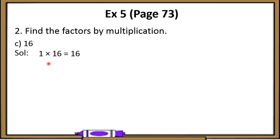Now all other factors will lie between 1 and 16. Let's check whether 2 is a factor of 16 or not by division. If we divide 16 by 2, we get remainder 0. That means 2 is a factor of 16, and the quotient, which is 8, will also be a factor of 16.